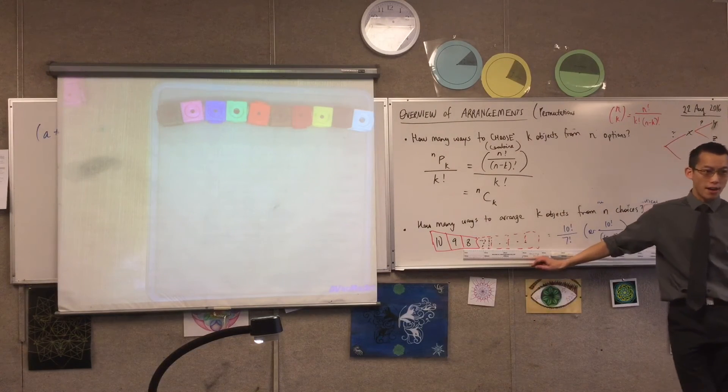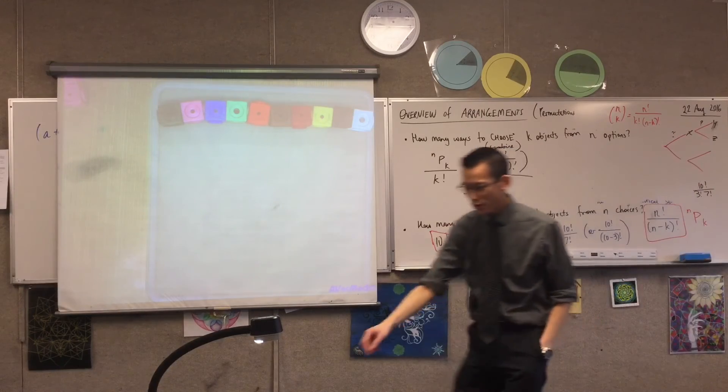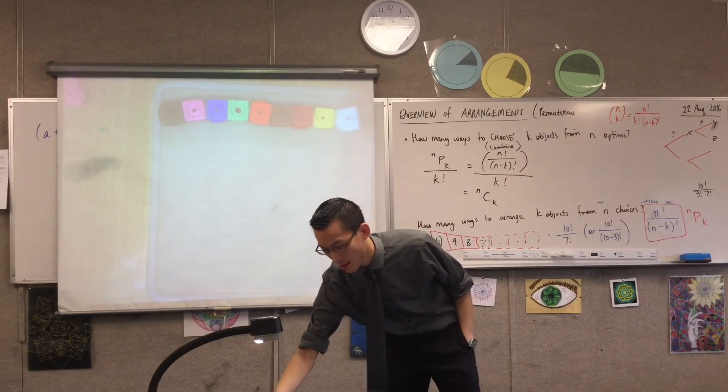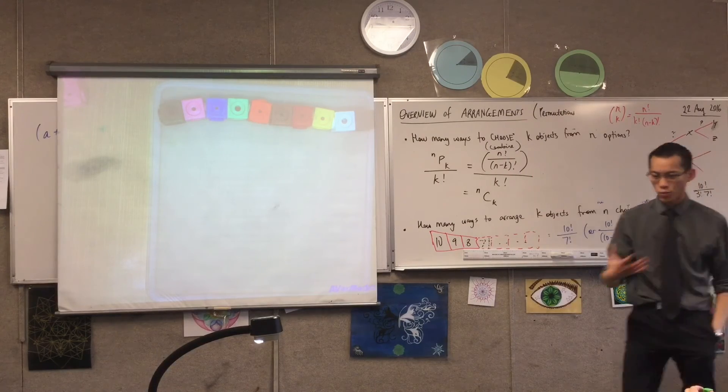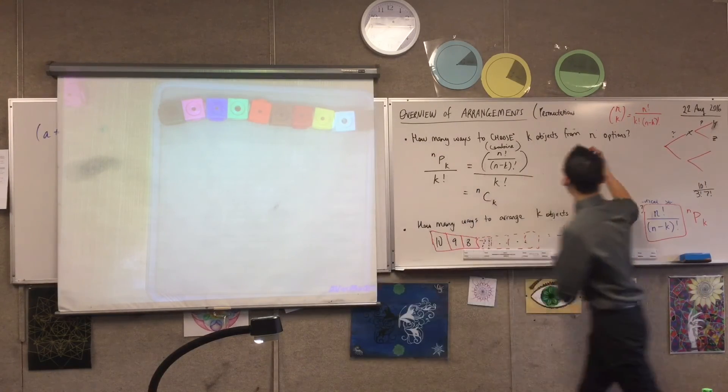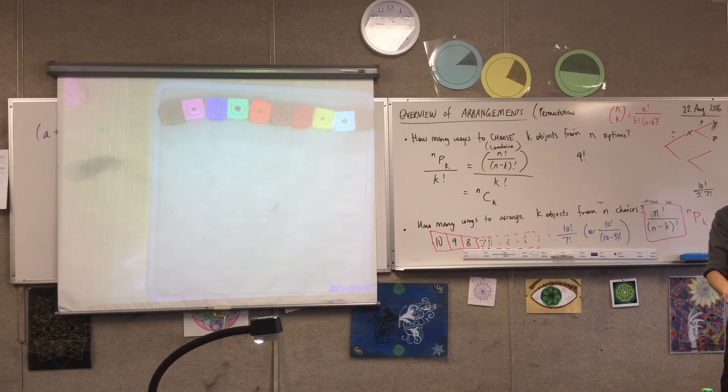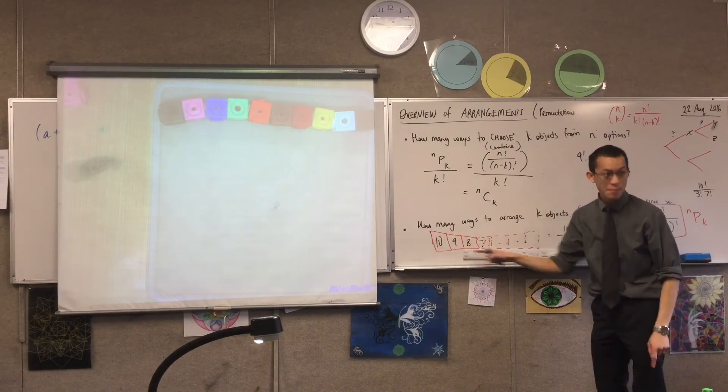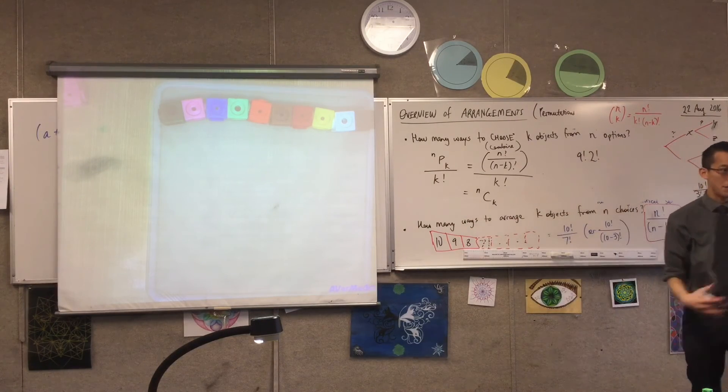But you have undercounted, haven't you? Because, you know those two, you could just say, hey, we're next to each other, but I'm just going to swap places. They're still next to each other. So, what I did was, how do we come up with this number? The 9 factorial, where did it come from? It came from, I had 9 boxes to fill. And then you multiply by 2 factorial because?